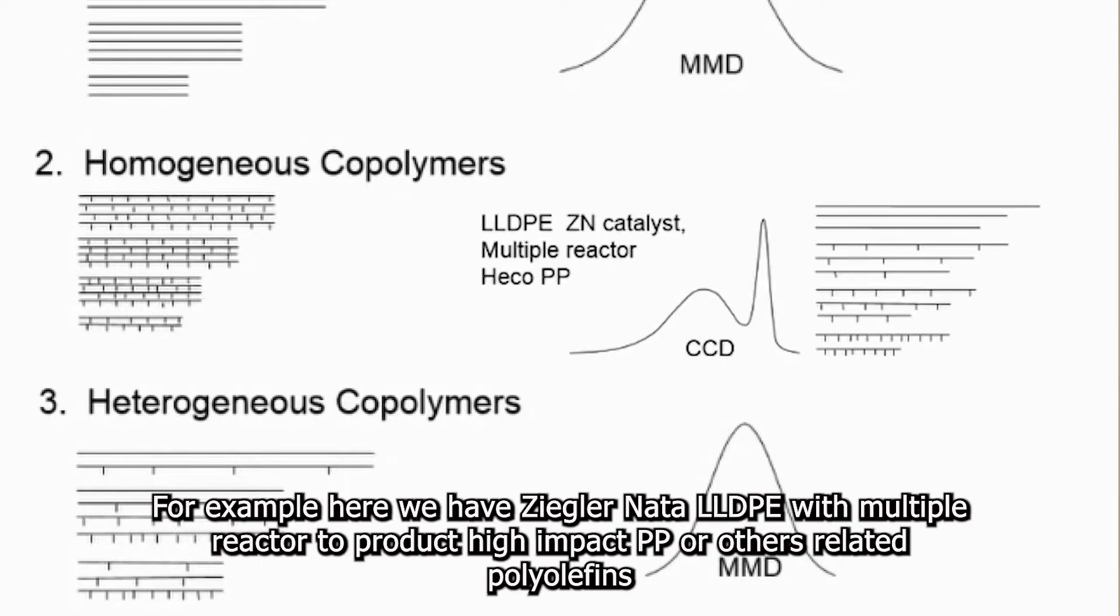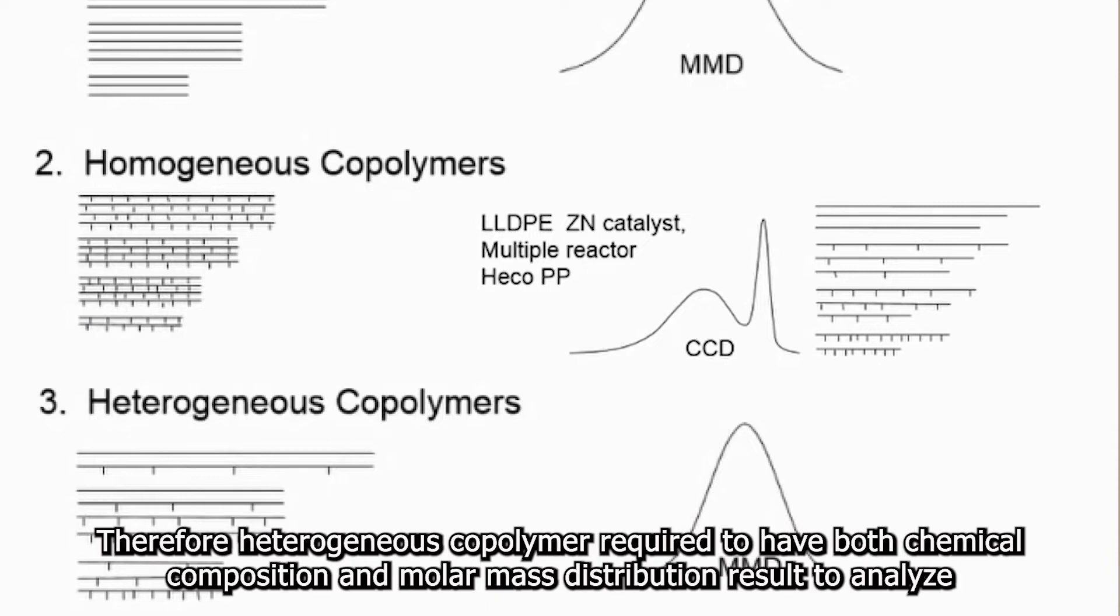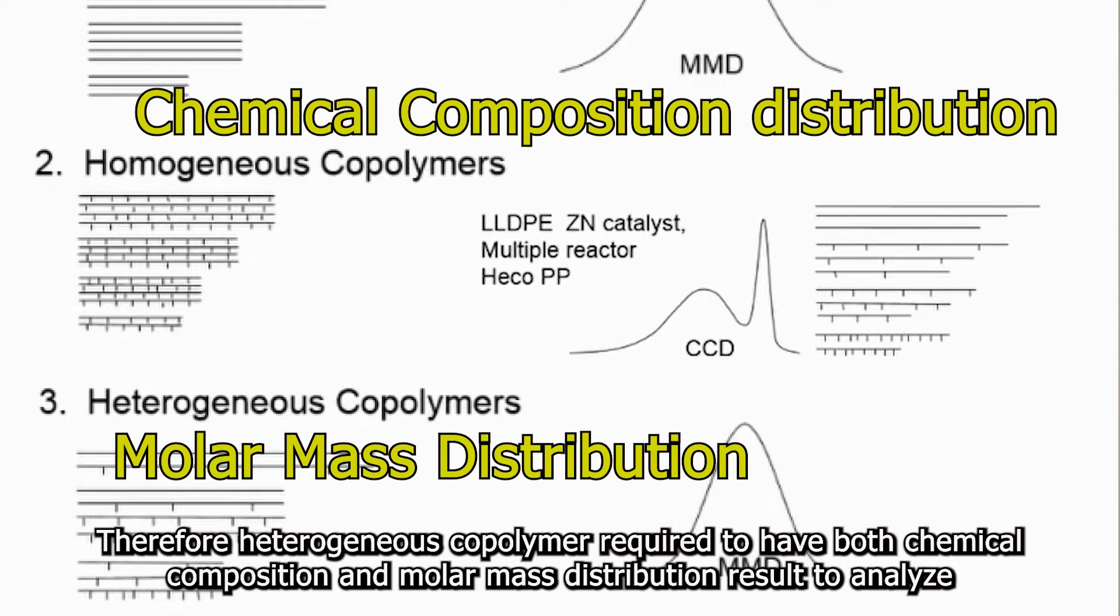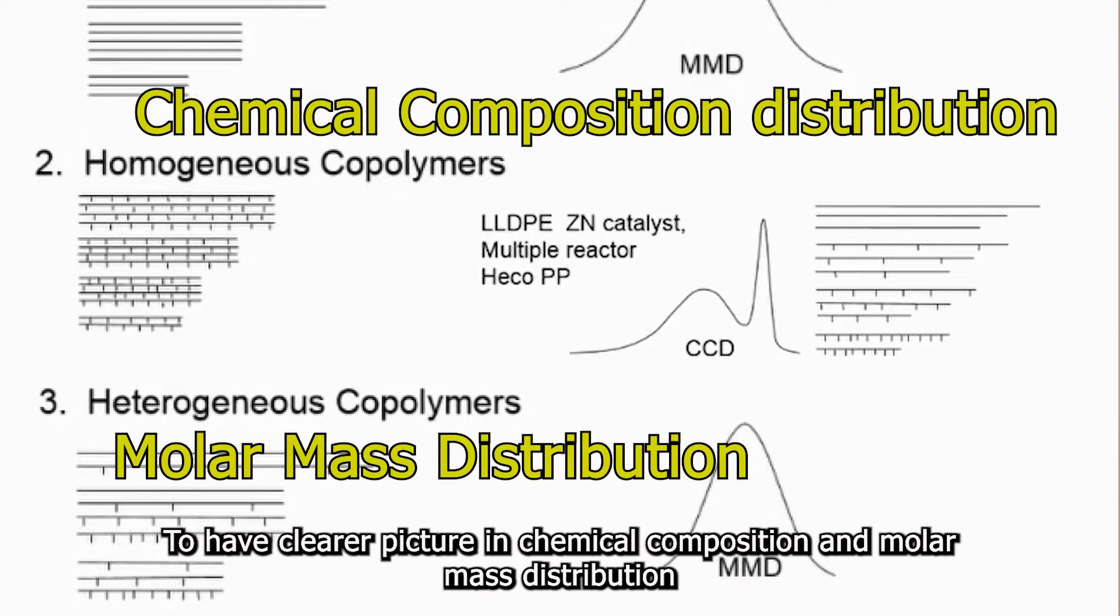For example, here we have Ziegler-Natta LLDPE with multiple reactors to produce high impact PP or other related polyolefin. Therefore, heterogeneous copolymer requires both chemical composition and molar mass distribution results to analyze to have a clearer picture.